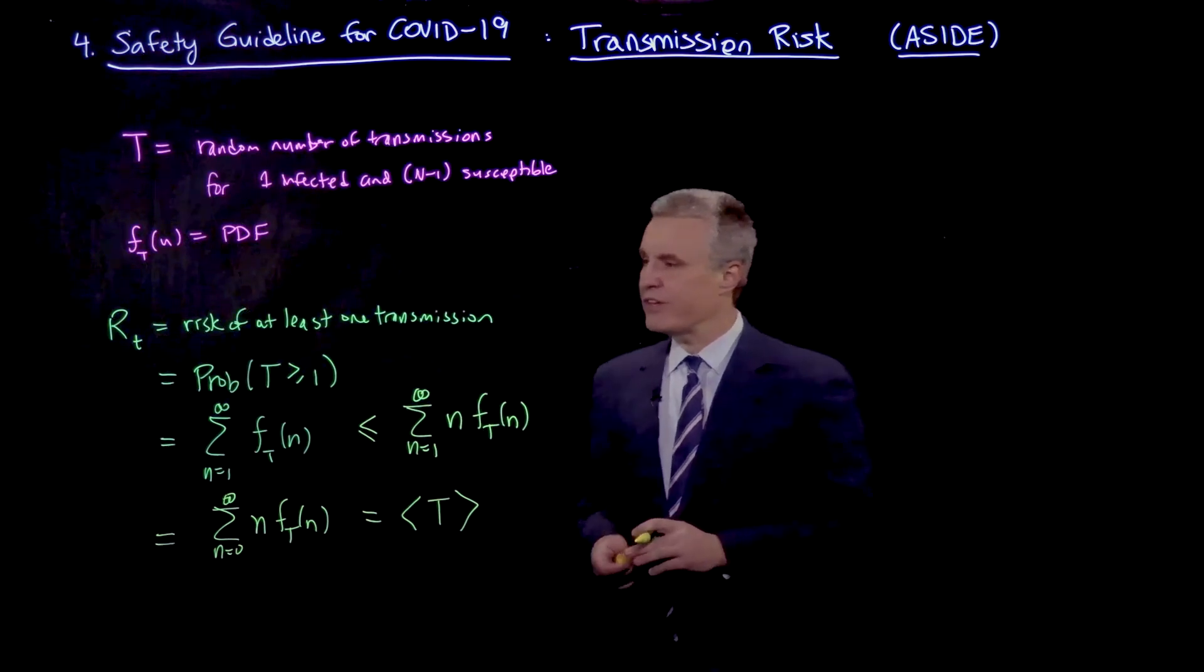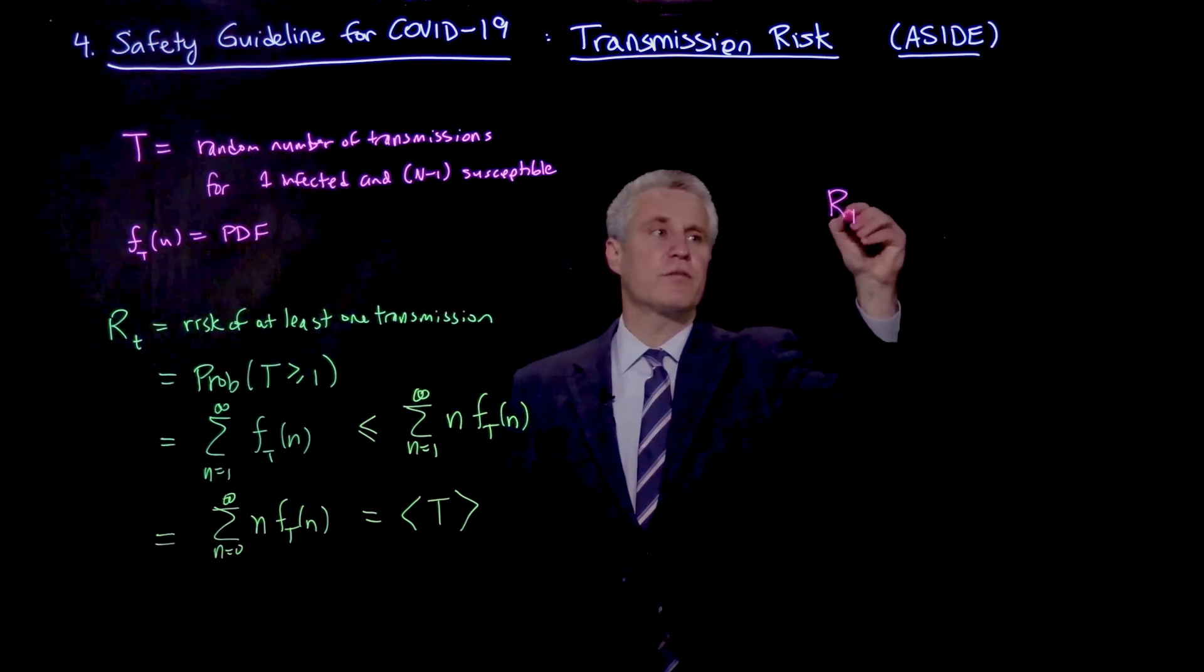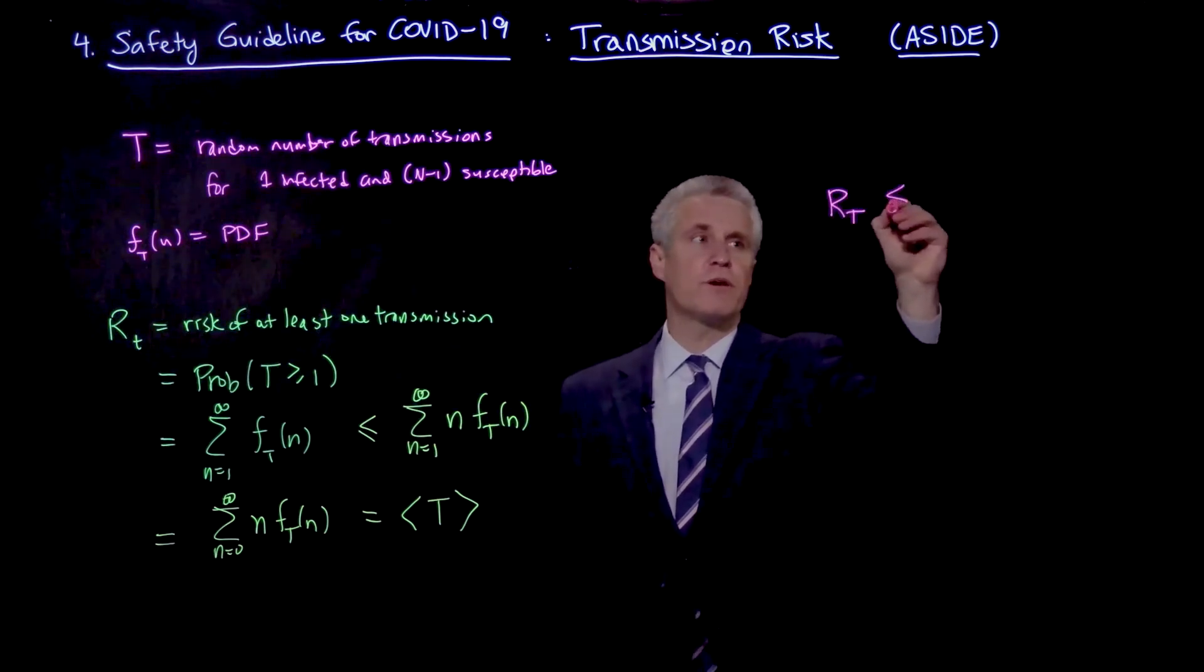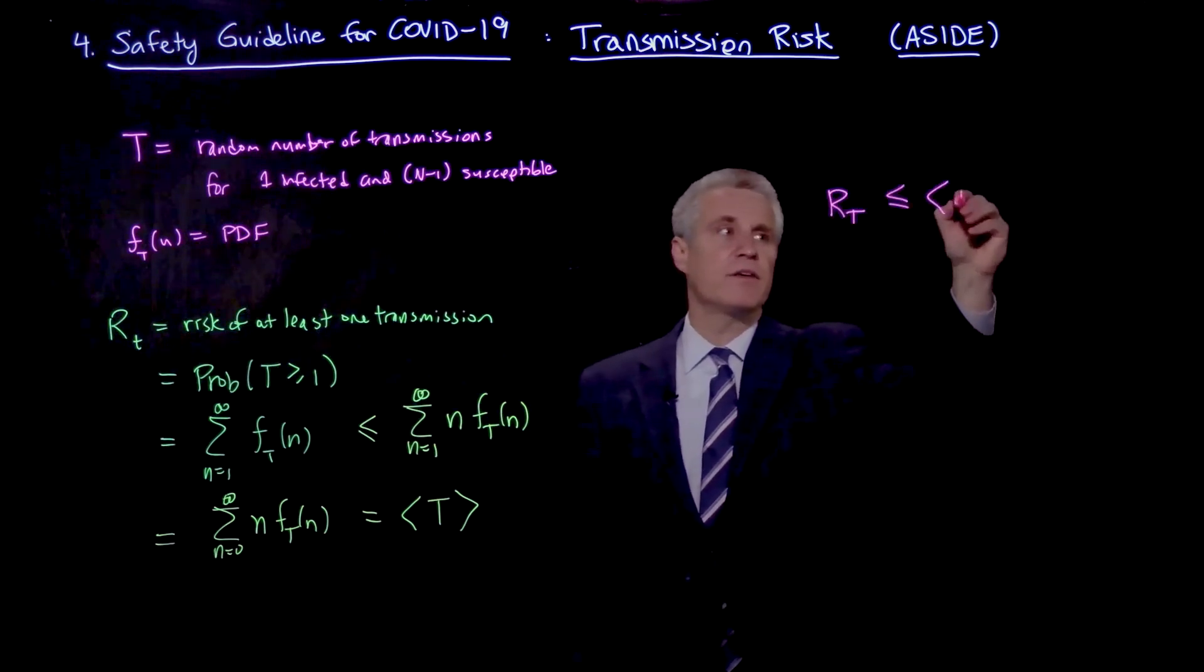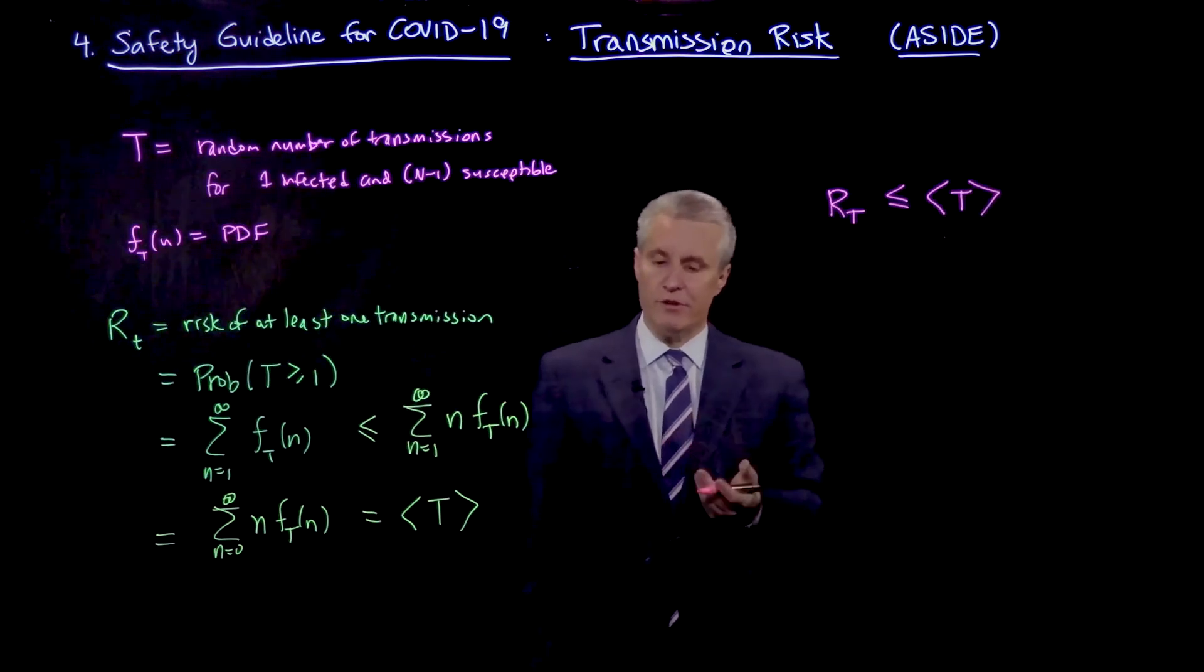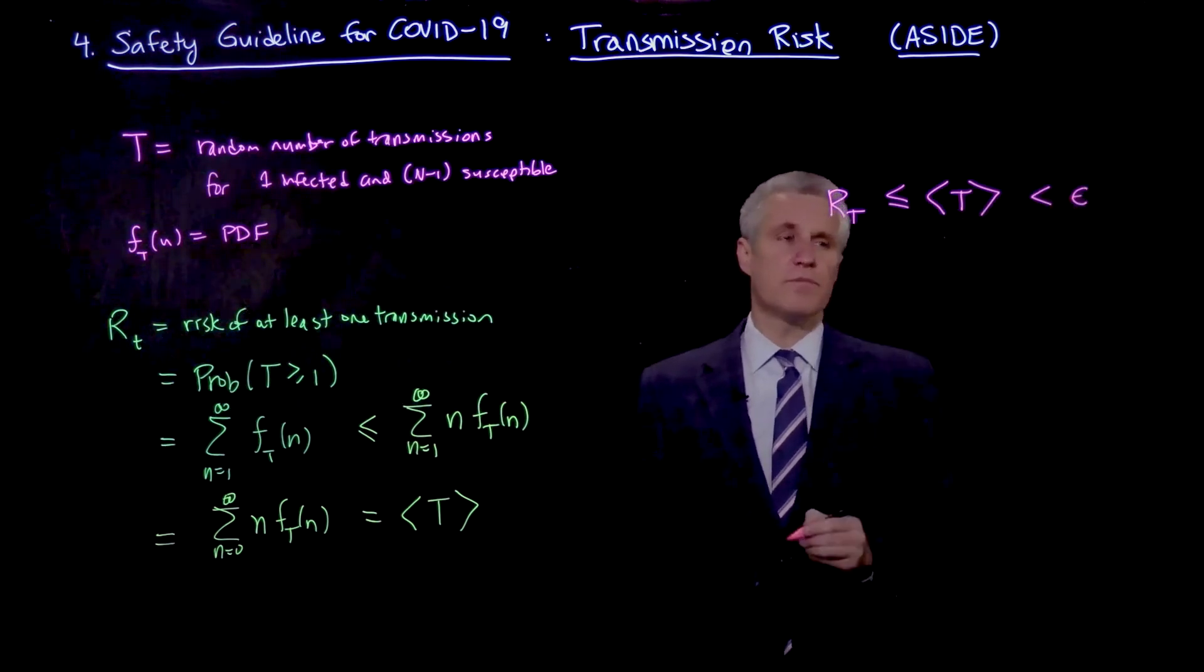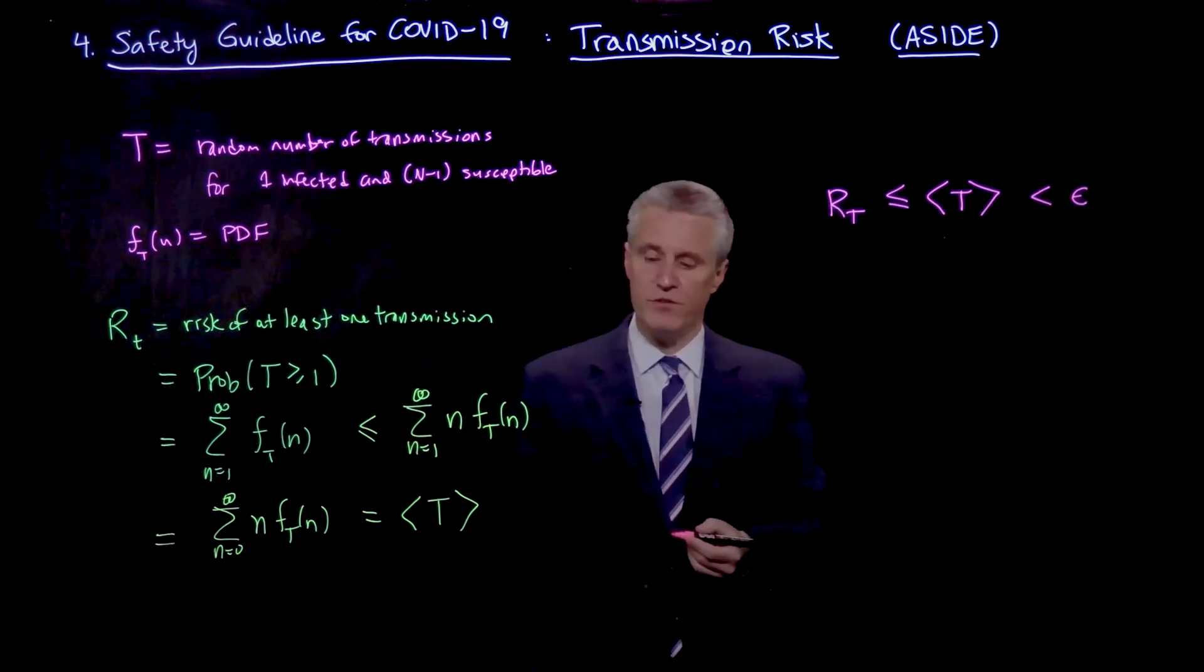So what we're seeing here is that the risk of a transmission is rigorously bounded above by the expected number of transmissions. And so therefore, if we require that this is less than epsilon, our risk tolerance that we've just introduced,